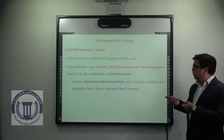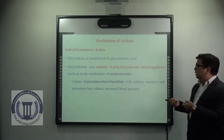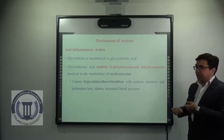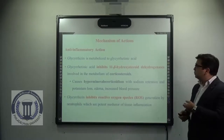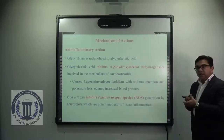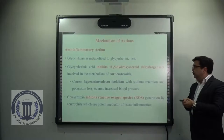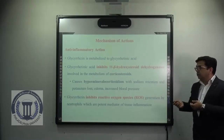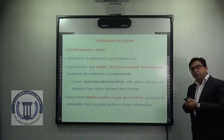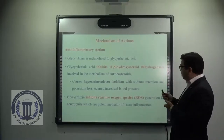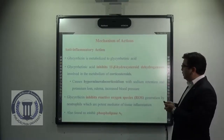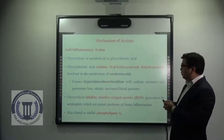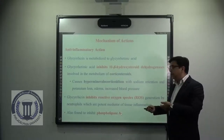This results in sodium retention, potassium loss, water retention, cytotoxic edema, and increased blood pressure. Glycyrrhizin is also found to inhibit reactive oxygen species generation by neutrophils, which are potent mediators of tissue inflammation.